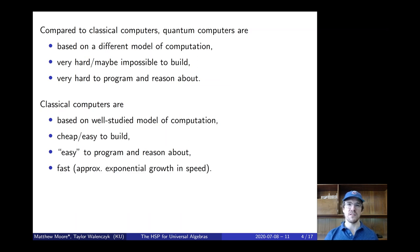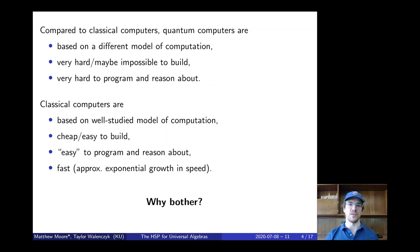In contrast, classical computers are based on a very well-studied model of computation, namely the Turing machine model. They're cheap and easy to build — almost everyone has multiple computers they use on a daily basis. They're really quite easy to program and reason about; pretty much every high school student can be taught how to program one. And they're incredibly fast. Classical computers have seen approximately exponential growth in speed and are incredibly powerful now.